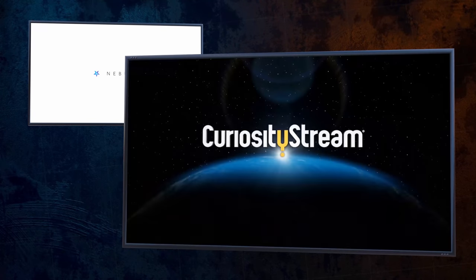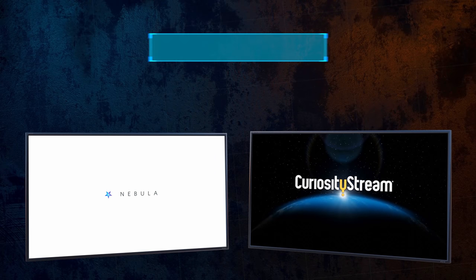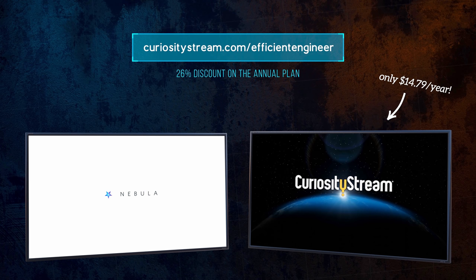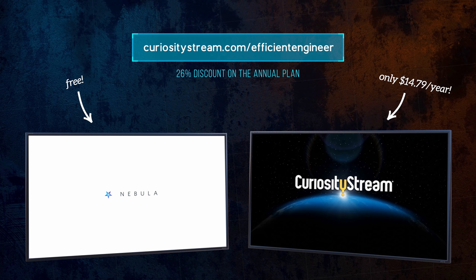If you sign up to CuriosityStream using this link, you'll get a 26% discount on the annual plan, and you'll get Nebula for free. That's CuriosityStream and Nebula for less than $15 a year. It really is the best deal in streaming. So, to get the bundle deal and 26% off, head over to CuriosityStream.com slash EfficientEngineer or click on the link in the description.